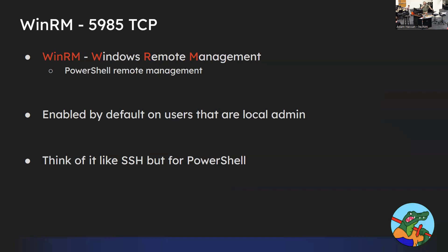WinRM — Windows Remote Management — is used for Windows remote management, letting you log in through PowerShell remotely. It's primarily an administrator tool. If you nmap scan something it won't show by default because it's not a top 1000 common port, but it does exist by default on domain controllers. If you are a local administrator, you can log into a machine through WinRM and execute code as a high-integrity user. It's basically SSH but for PowerShell, though by default the authentication traffic is not encrypted.